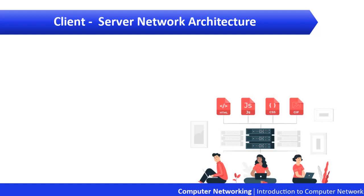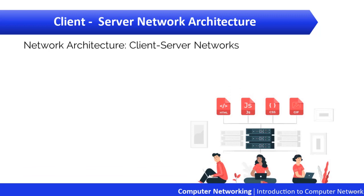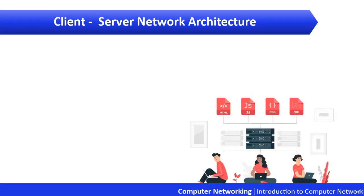In the last lecture we had a look at peer-to-peer network architecture and we also discussed the disadvantages of peer-to-peer architecture, which we will be overcoming in client-server architecture. Client-server networks are pretty much the polar opposite of peer-to-peer networks because in them a single server uses a network operating system for managing the whole network.